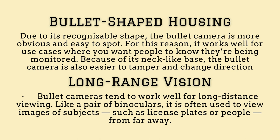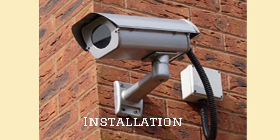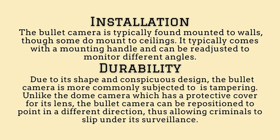Long-Range Vision: bullet cameras tend to work well for long-distance viewing. Like a pair of binoculars, it is often used to view images of subjects such as license plates or people from far away. Installation: the bullet camera is typically found mounted to walls, though some do mount to ceilings. It typically comes with a mounting handle and can be re-adjusted to monitor different angles.